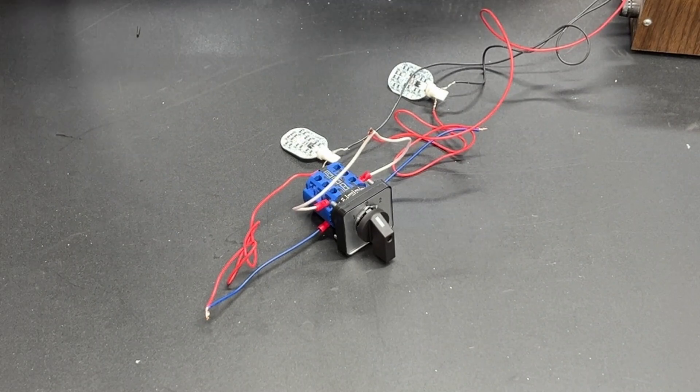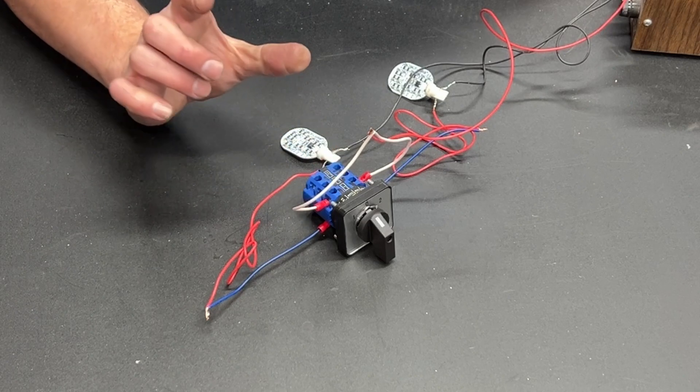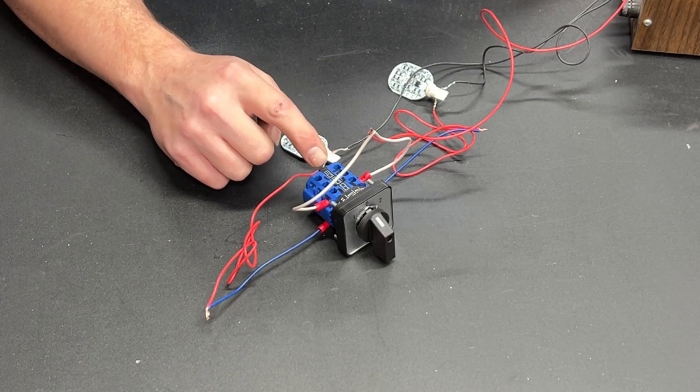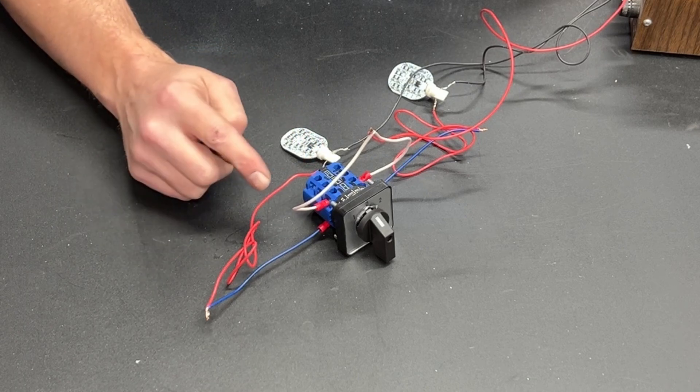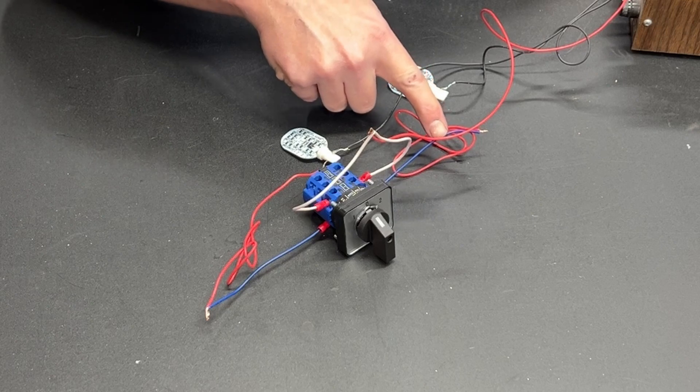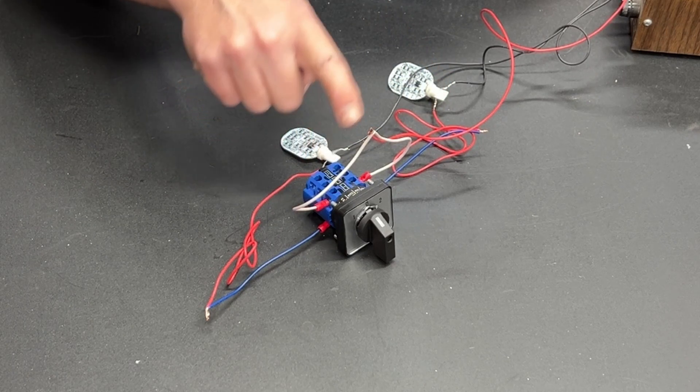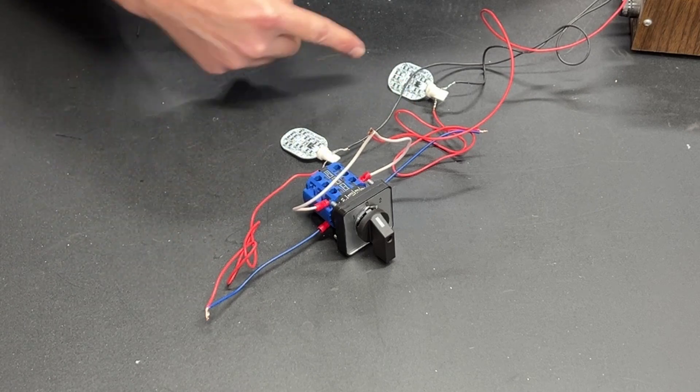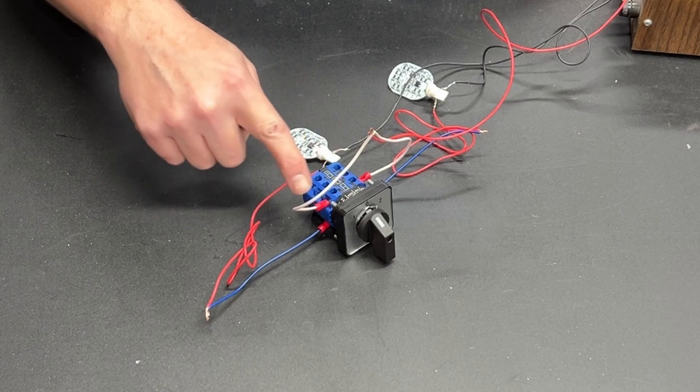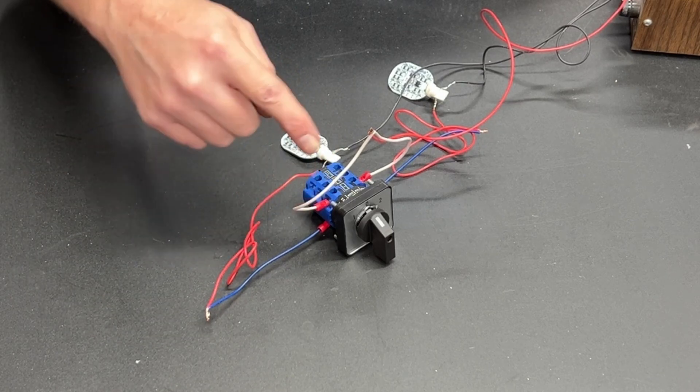All right so just like before we have power coming in on what is now our common. Now I want to be very clear here. This switch is not directional. In other words, had I taken this blue wire and attached it to this blue wire, that would have been our common and these two white wires could have gone to each of the light bulbs. So the switch doesn't care if power is flowing in here and out here or if power is flowing in on the blue and out on the white.